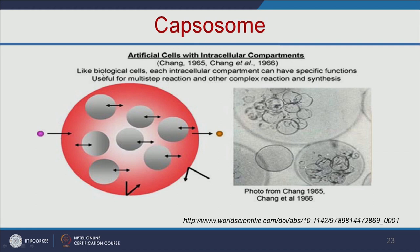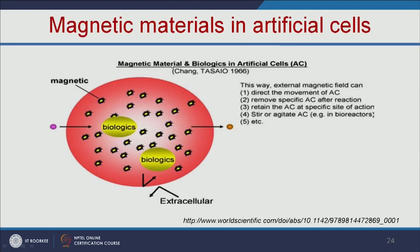The capsozome is like your biological cell — each intracellular compartment can have specific functions, acting like a nucleus, mitochondria, or lysosome. All the small capsules are encapsulated into a big size lipid-based carrier, forming the capsozome, which can mimic your biological cell. Similar to the capsozome, we can also add magnetic particles. The advantage is we can direct the movement of artificial cells to a particular location using an external magnetic field, remove artificial cells after the reaction, and retain them at a specific site for action to release more drug or therapeutic molecules at that location. In bioreactors, the magnetic properties can also be used to stir or agitate the cells.